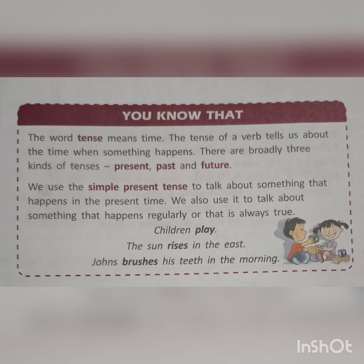There are broadly three kinds of tenses: present tense, past tense, and future tense. We use the simple present tense to talk about something that happens in the present time, or something that happens regularly or is always true. Present tense means right now what we are talking about or what we are doing — at that moment is known as present tense.